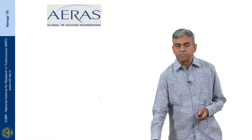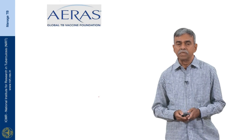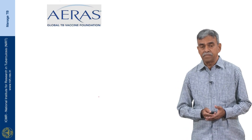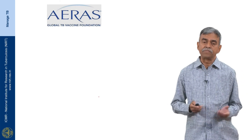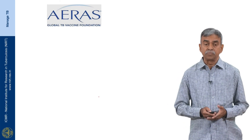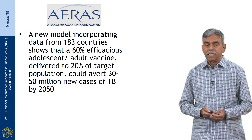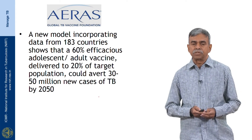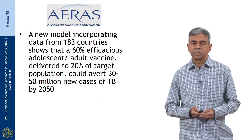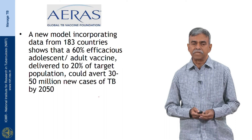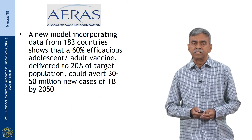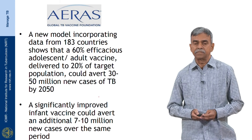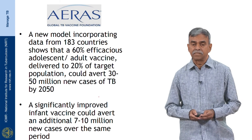AERAS is a non-profit organization — the global TB vaccine initiative — helping facilitate the development of new TB vaccines that are affordable and available to the poorest sections of society. AERAS says that a new model incorporating data from 183 countries shows that a 60 percent efficacious adolescent or adult vaccine delivered to 20 percent of the target population could avert 30 to 50 million new TB cases by the year 2050. A significantly improved infant vaccine could avert an additional 7 to 10 million cases over the same period.